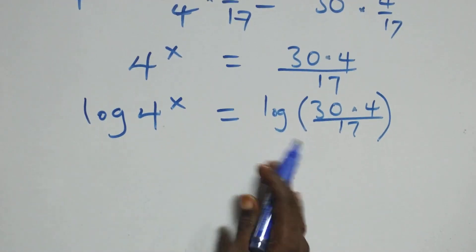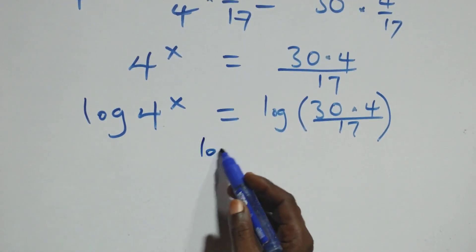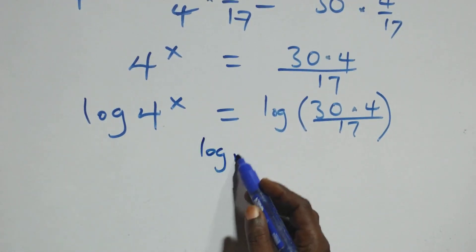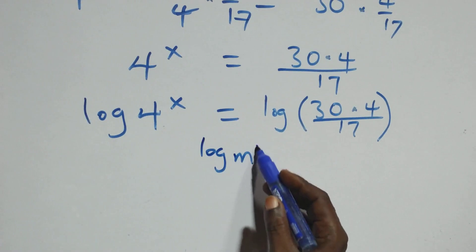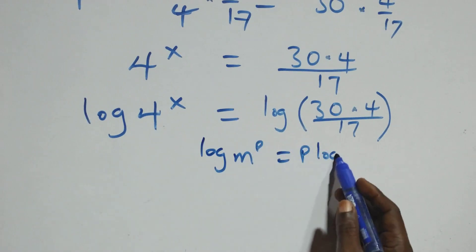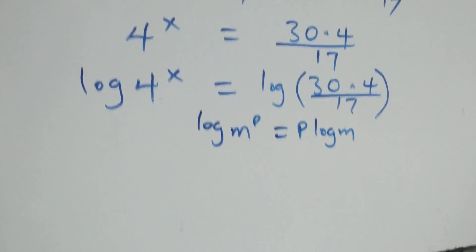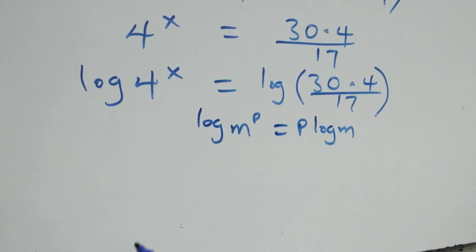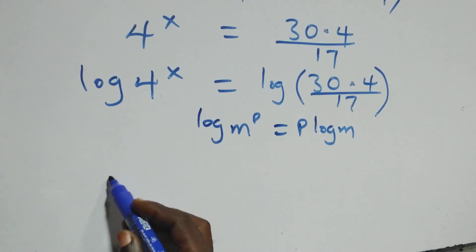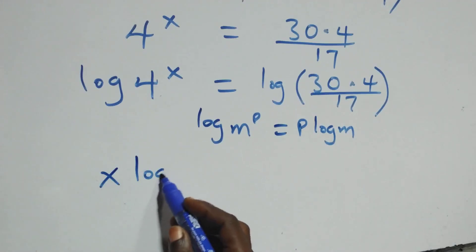We apply the power rule of logarithms: when we have log(a^p), this is the same as p·log(a). So this becomes x·log 4.